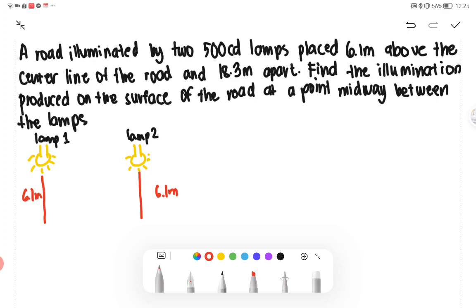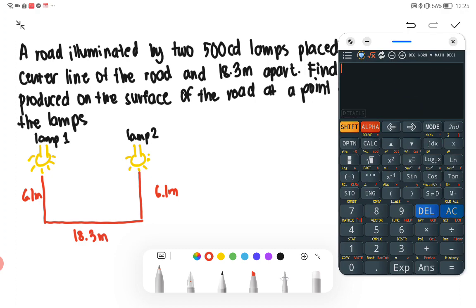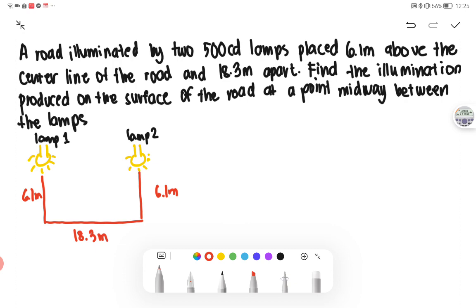And then, their distance is 18.3 meter. So we have 18.3 divided by 2, so we have 9.15 each side. Let's say this is the midpoint. This part is 9.15, and this part is 9.15 as well. Therefore, our illustration would be like this.